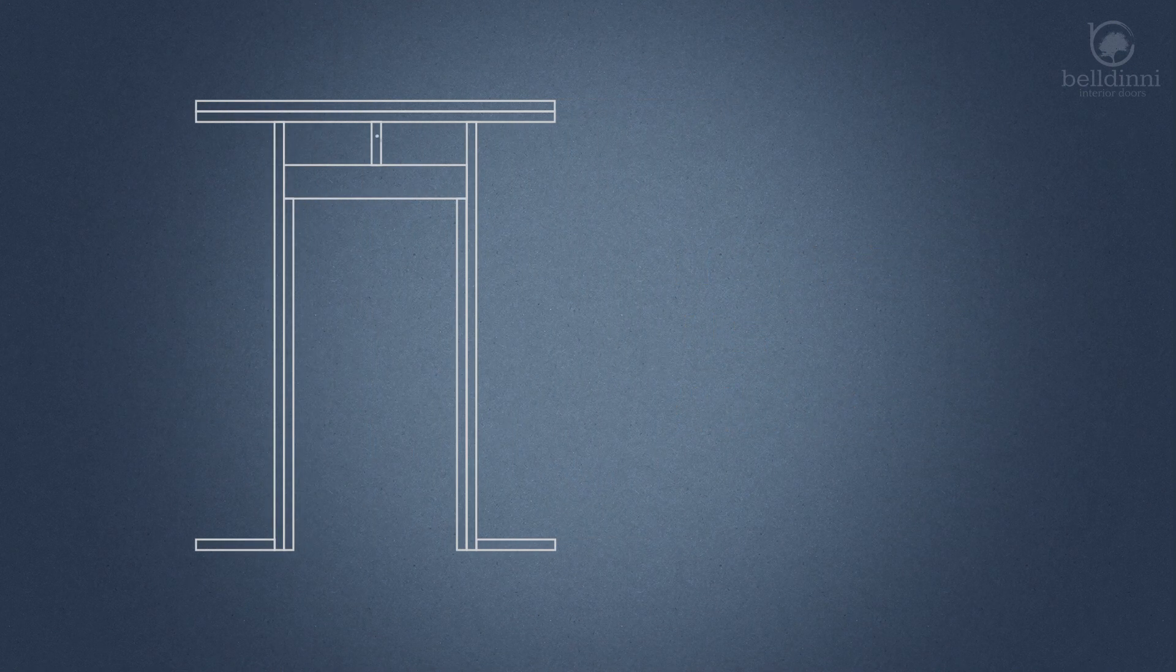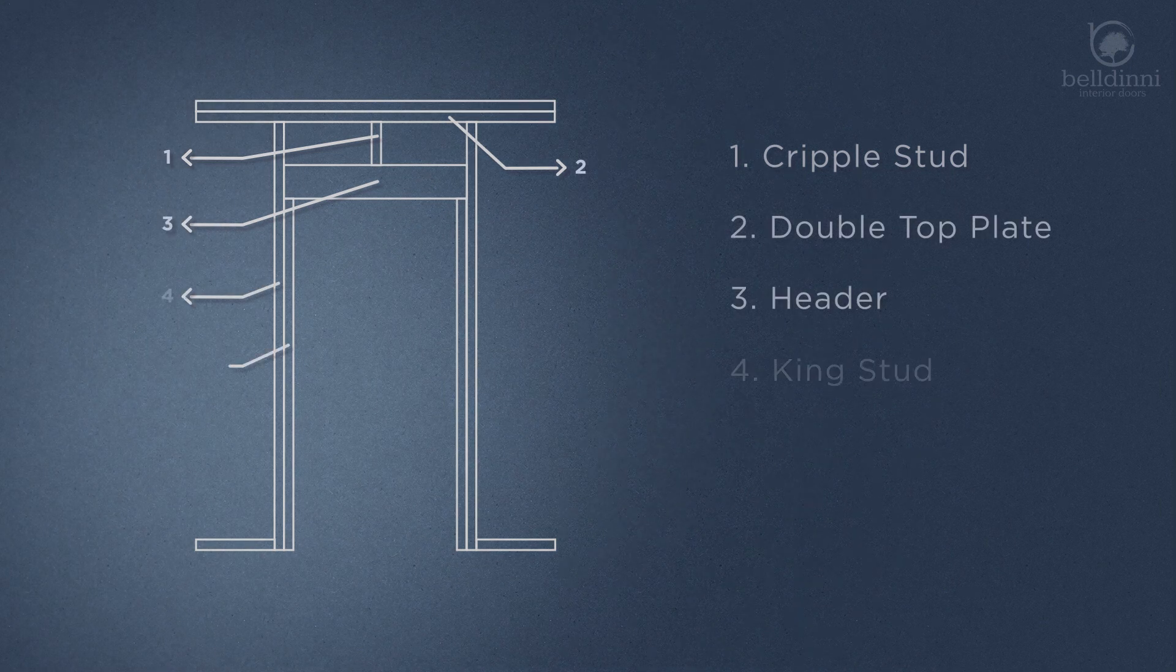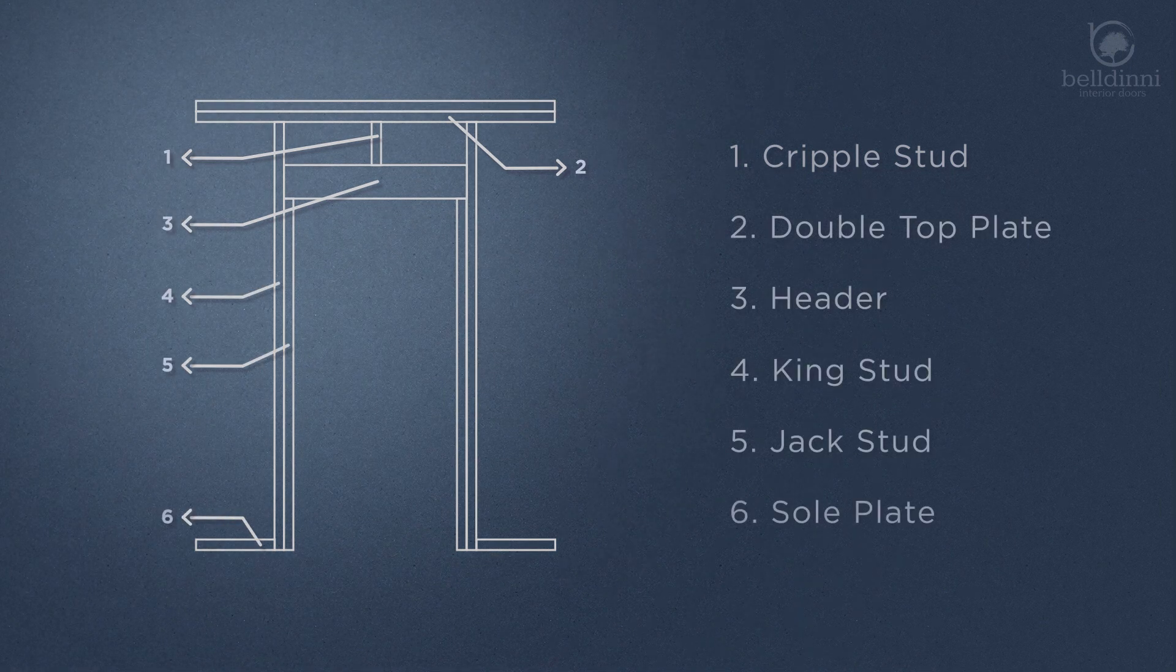A standard U.S. rough opening consists of cripple stud, double top plate, header, king stud, jack stud, and sole plate.